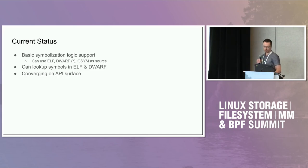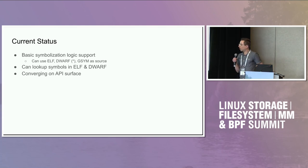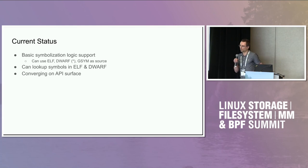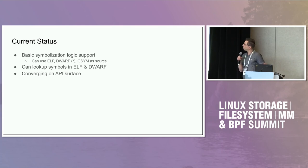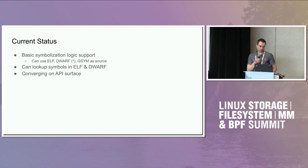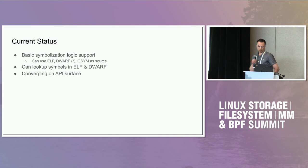What is the current status? We have basic support for symbolization. We can use ELF as a source, meaning we can handle ELF symbols, though that doesn't help if the binary is stripped. So we also support DWARF as well as GSYM as symbolization sources. DWARF comes with an asterisk, and I will explain a little bit later where the gaps currently are. For the reverse operation — lookup of names to addresses — we currently support ELF and DWARF as well.